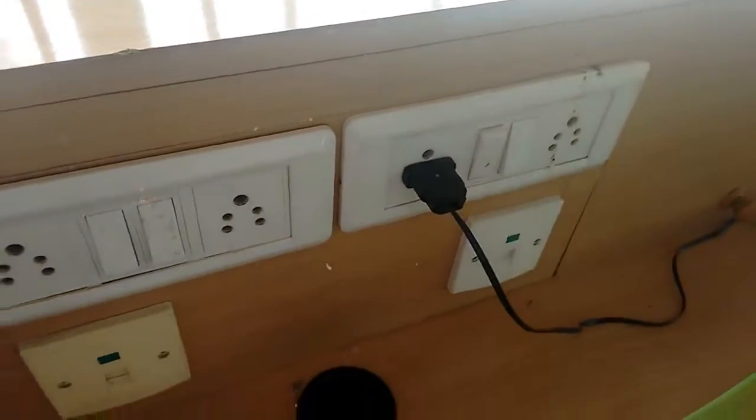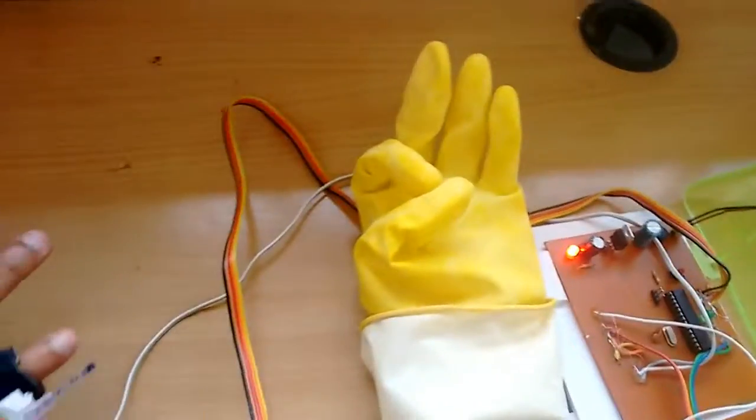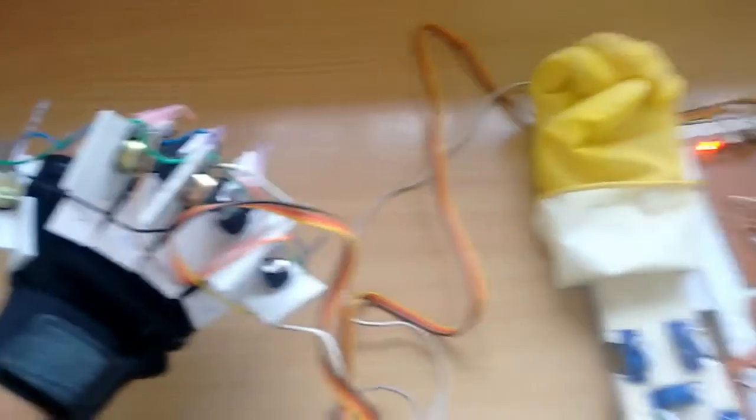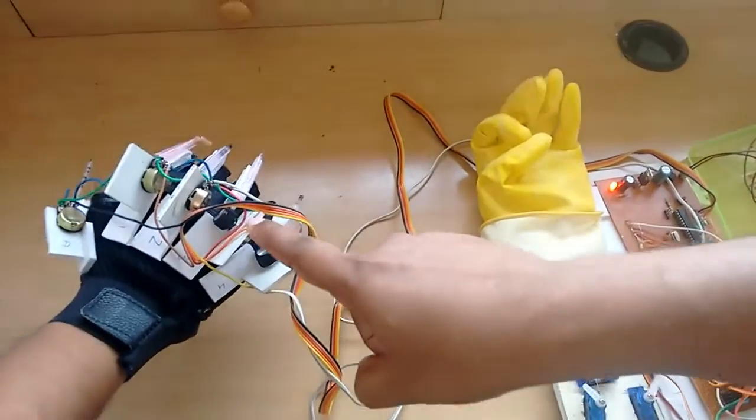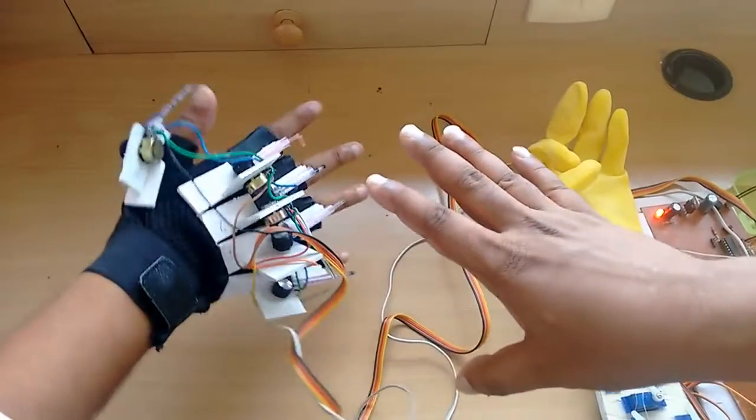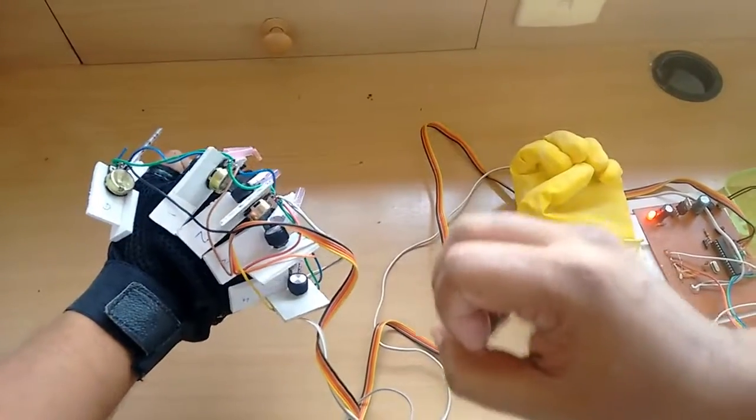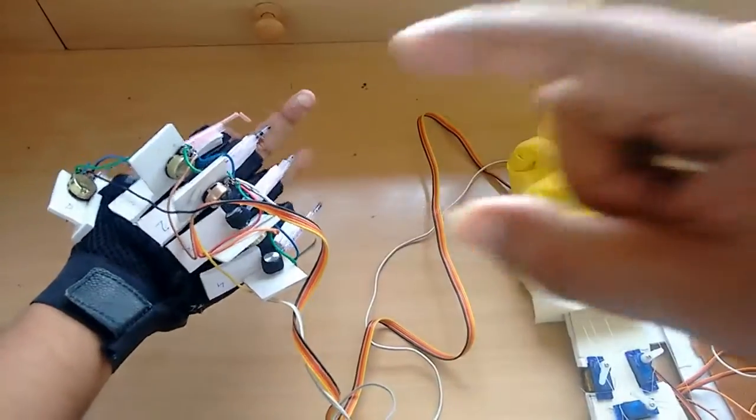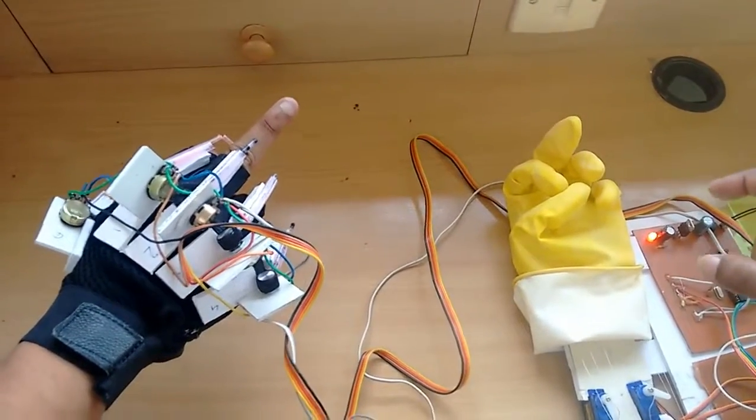Now you can see our robotic hand working. This is our glove that is controlled by potentiometers. We have used 5 potentiometers to control each of the fingers of the robotic hand.